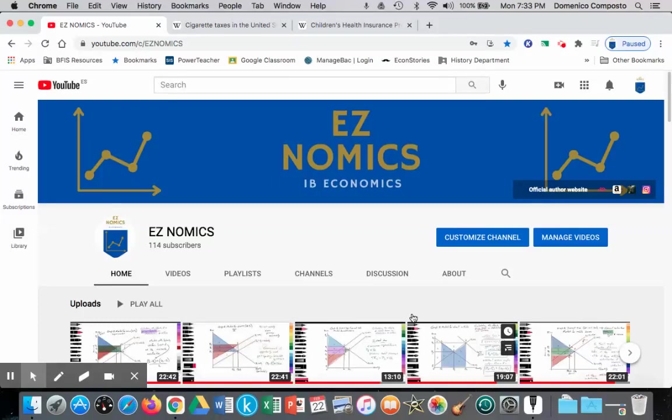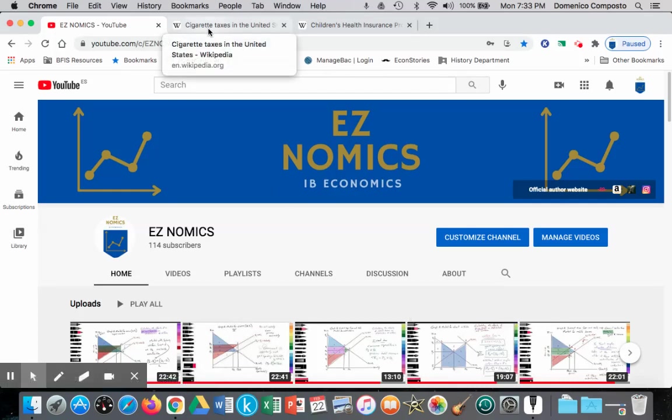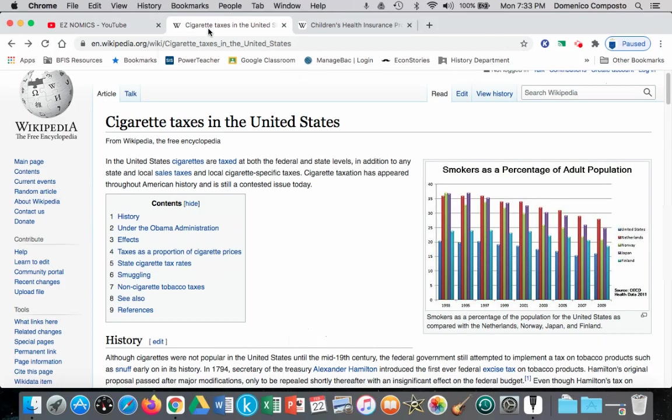Hello, this is Domenico with EZnomics, and today we're going to look at tax incidence, or who carries the burden of a tax, and how that relates to price elasticity of demand and price elasticity of supply. Our applied example will be cigarettes, particularly in the United States.